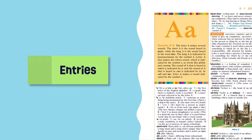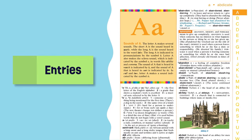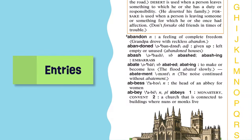A dictionary is filled with entries, and each entry contains information about a particular word. These entries are arranged in alphabetical order.